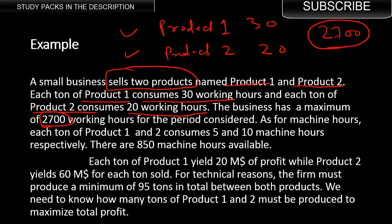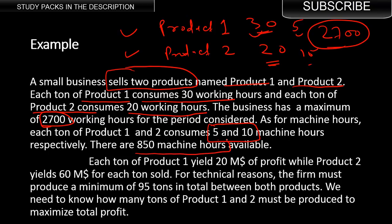As for machine hours, each ton of product one consumes 5 machine hours and product two consumes 10 machine hours. So we have 30 and 20 for man hours, and 5 and 10 for machine hours — that's the difference. There are 850 machine hours available to us. So we have a constraint on man hours of 2,700 and a constraint on machine hours of 850.